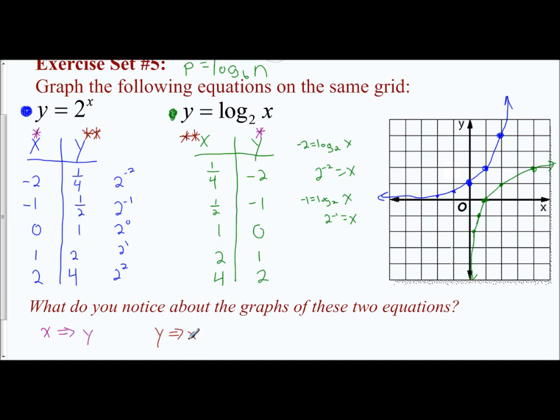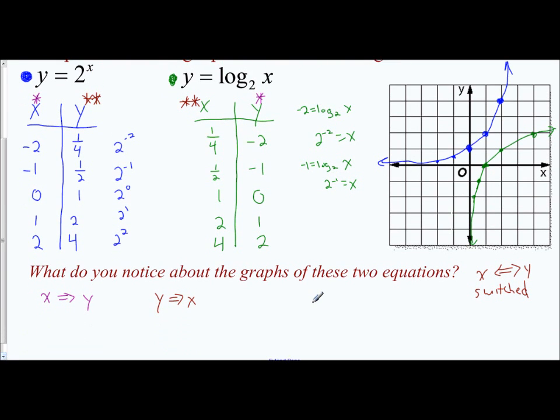That means your x values and your y values traded places - they switched with each other. What does that mean when your x and y values switch? That is what we call inverses. They are inverses of each other. Inverses will reflect over the equation y equals x, and they are perfect reflections over that line. That tells us exponential form and logarithmic form are inverses of each other.